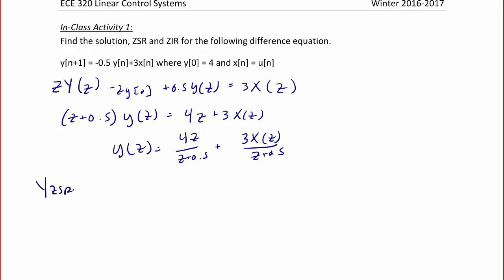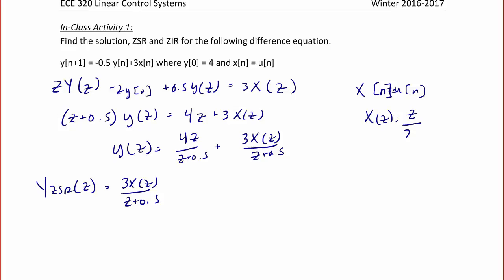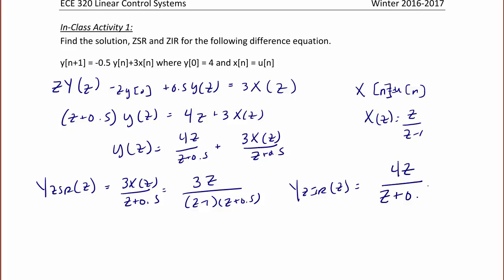The zero state response is due to zero initial conditions: YZSR = 3 X(Z)/(Z + 0.5). Since X(N) = U(N), then X(Z) = Z/(Z − 1), so this can also be written as 3Z / [(Z − 1)(Z + 0.5)]. The zero input response is when X(Z) = 0, giving YZIR = 4Z/(Z + 0.5).